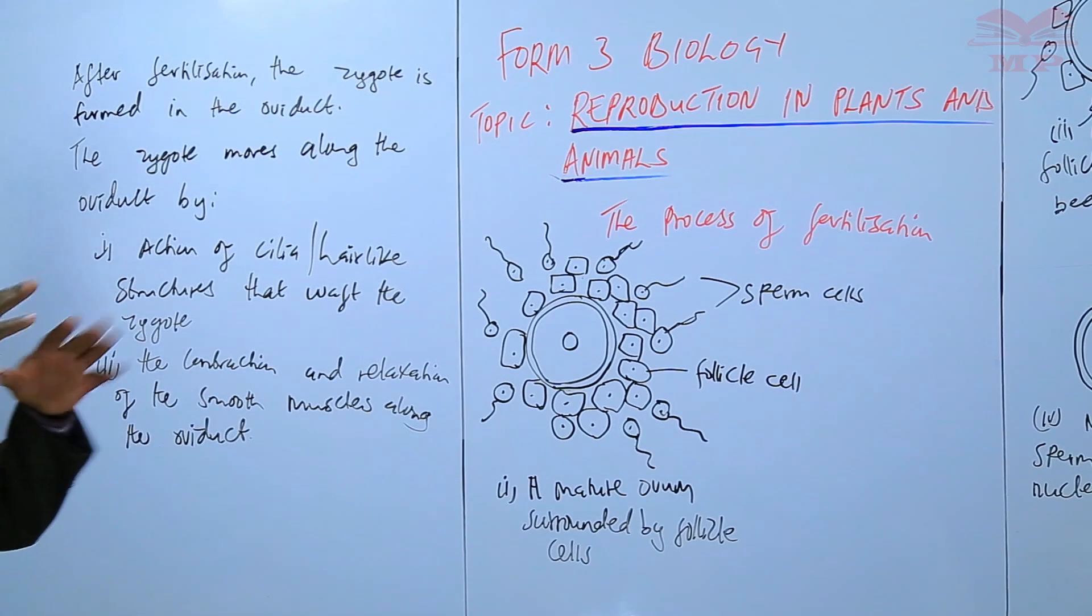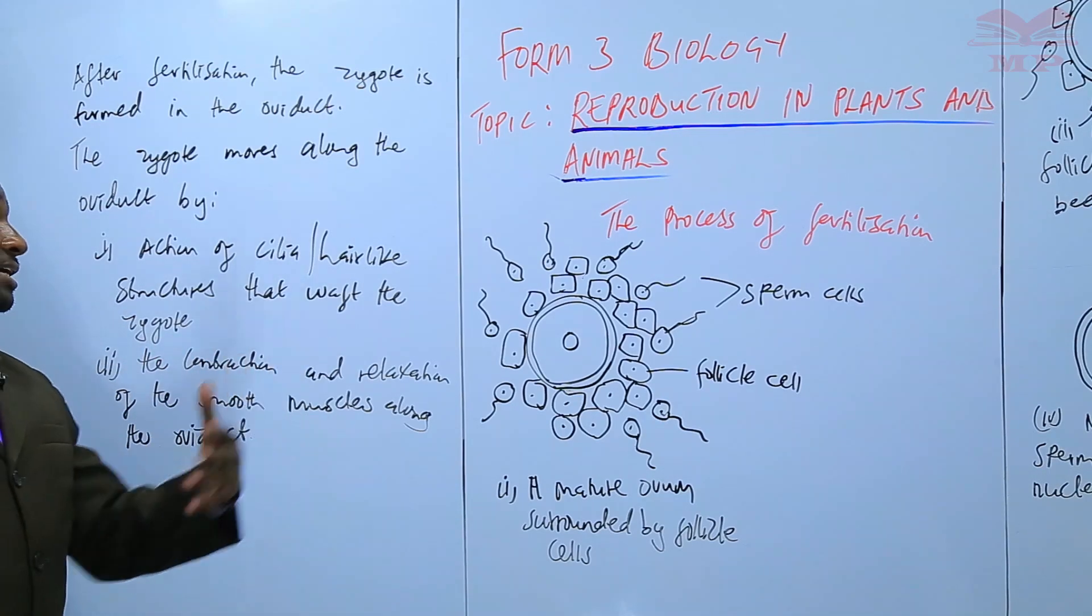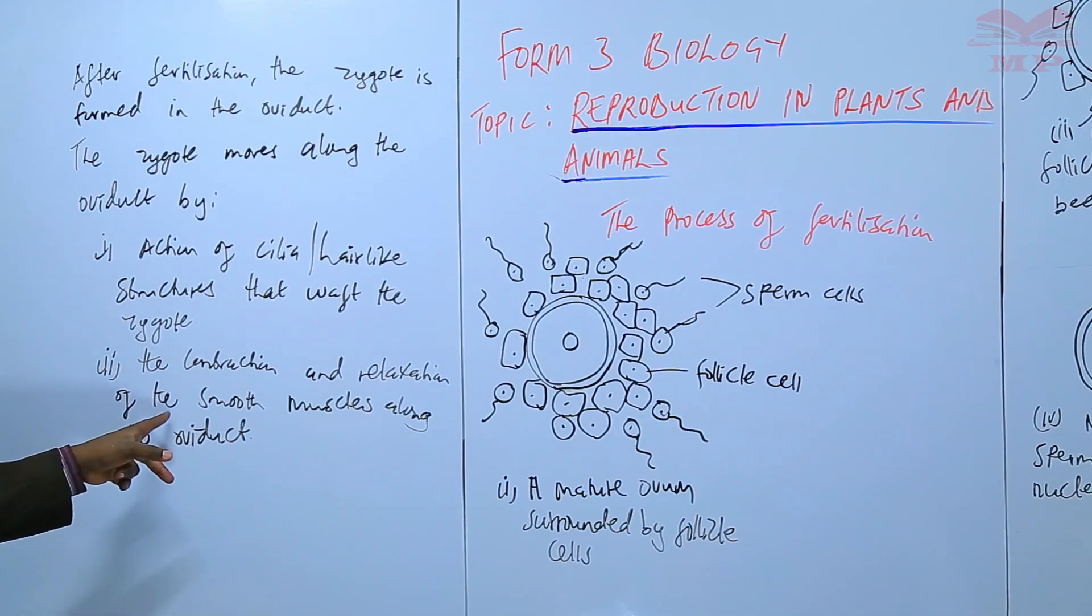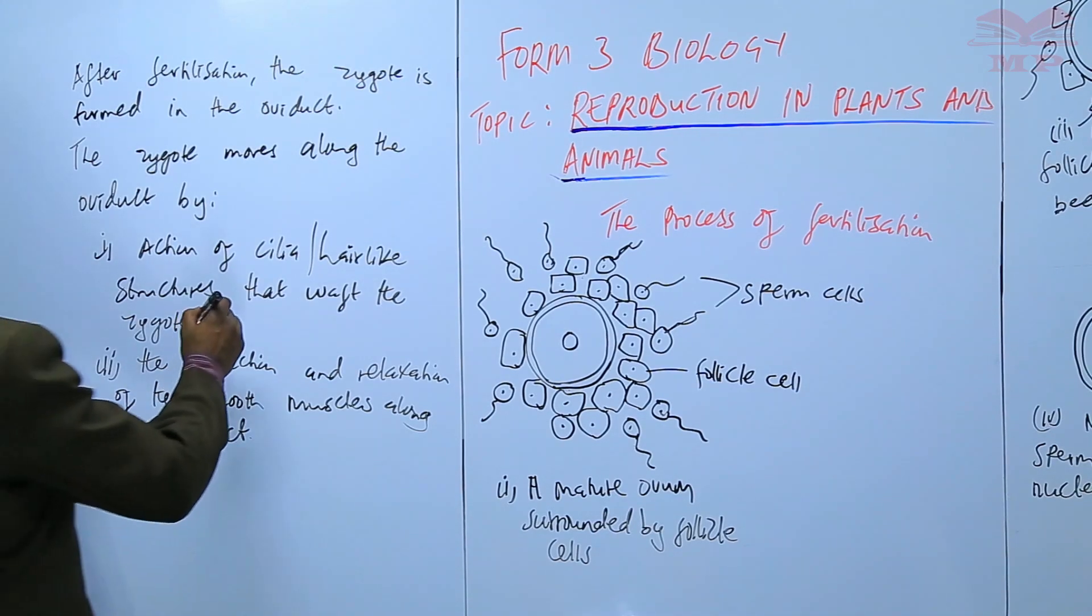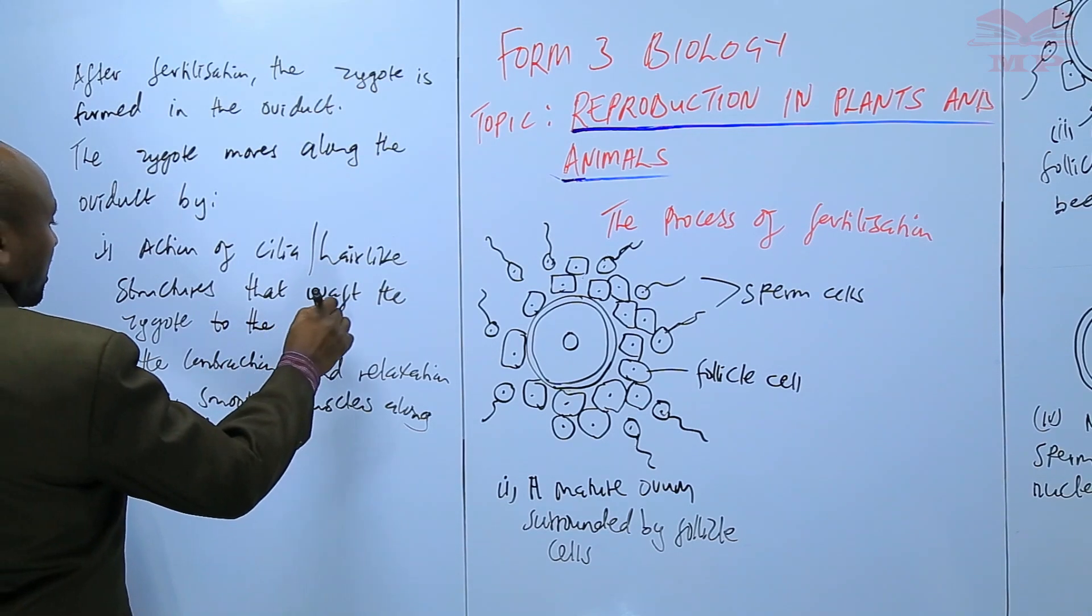The action of the cilia propel or waft the zygote towards the uterus, and the contraction and relaxation of the smooth muscles along the oviduct propel the zygote to the uterus.